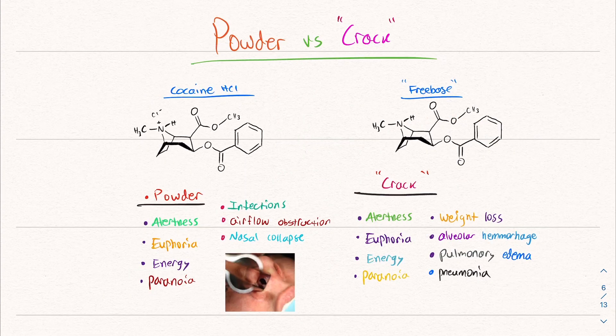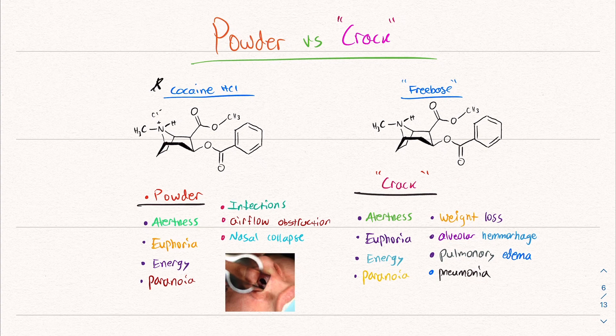So just to summarize at least the comparison, you have cocaine hydrochloride, which is a powder, increases alertness, euphoria, you have energy and paranoia. Then you have crack cocaine, alertness, euphoria, energy, paranoia. The effects are very similar. They can differ, but in reality, it's still cocaine. The physical properties differ and some of the effects differ, but across the board, it's very similar. It just comes in different forms.